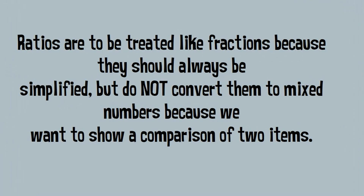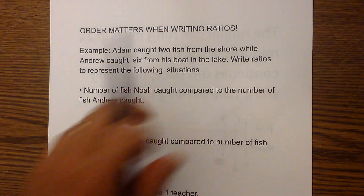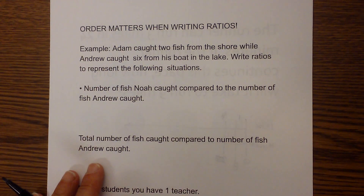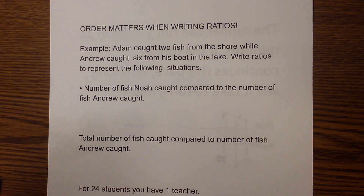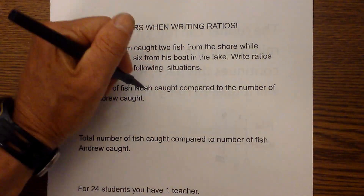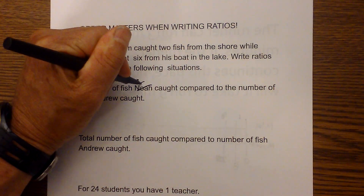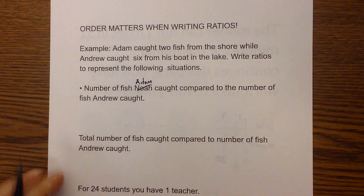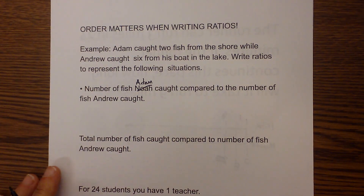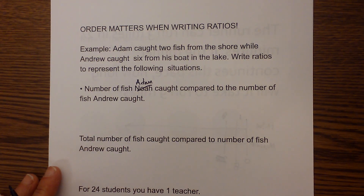Let's look at some examples of ratios. The order matters when writing ratios. We have a typo here — it should be Adam. Adam caught two fish from the shore while Andrew caught six from his boat in the lake.